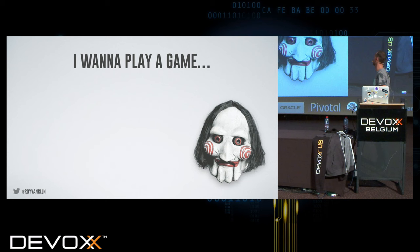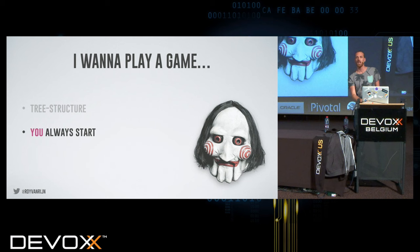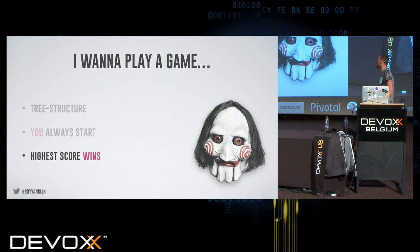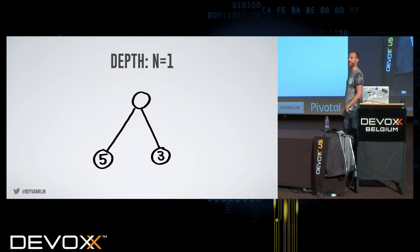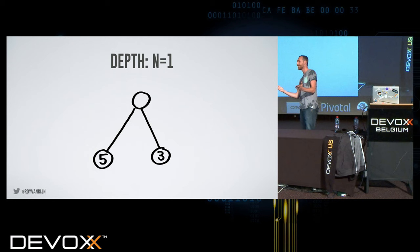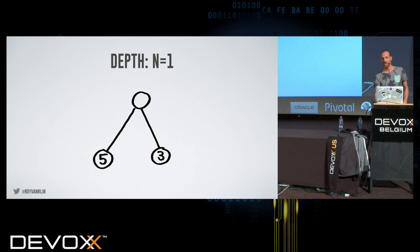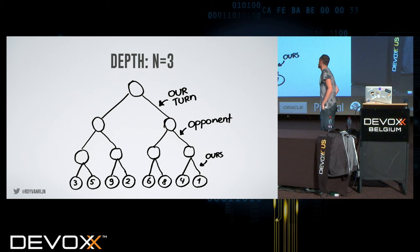I want to play a game. The game we're starting with is a very simple game. We take a tree. You can always start, and the one with the highest score wins. There's a Jigsaw reference — that's Jigsaw. We start. Do we go left or right? Go left, left. Because left is higher — 5 is higher than 3.